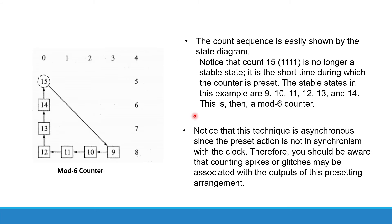Now, here the count sequence is easily shown by this state diagram. Notice that count 15 is no longer a stable state since it is the short time during which the counter is preset. The stable states in this example are starting from 9, 10, 11, 12, 13, 14.